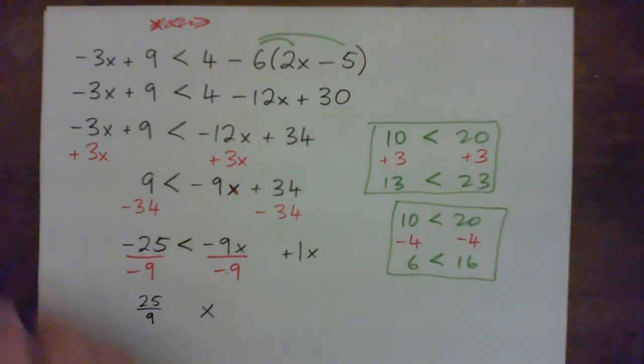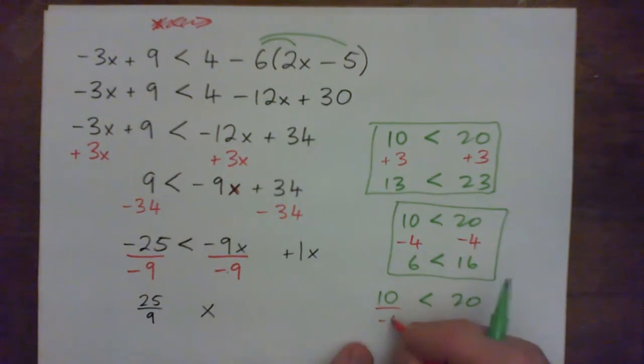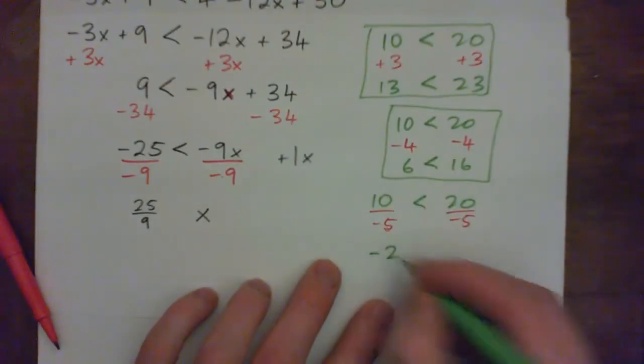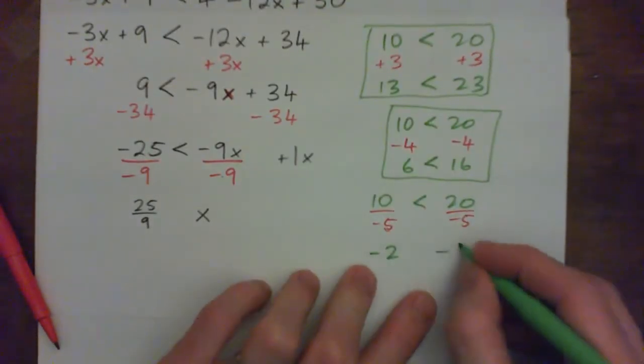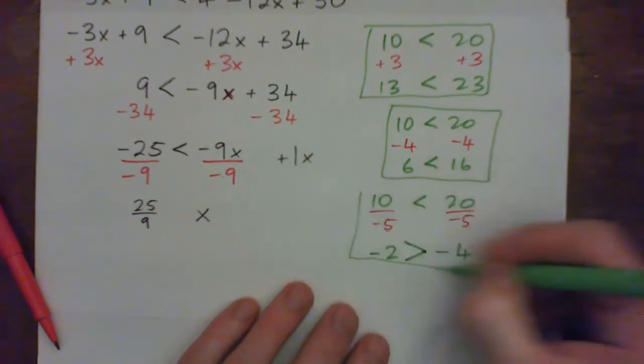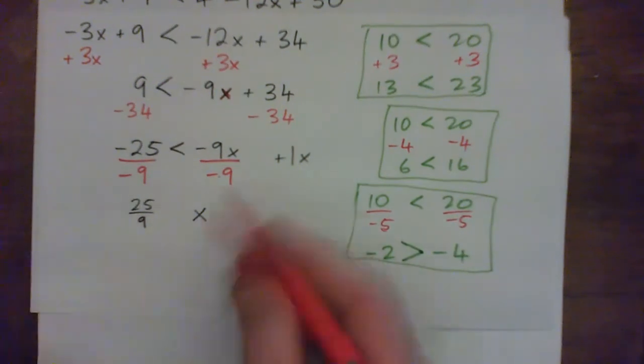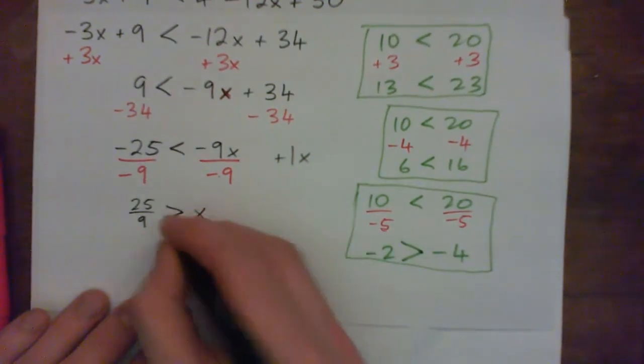But when you divide by a negative things happen. If we had 10 is less than 20, and we divide both sides by negative 5, 10 over negative 5 is negative 2, 20 over negative 5 is negative 4. And negative 4 is actually lesser than negative 2. Negative 2 is greater. So when you divide by a negative, you must change the direction of the inequality. So we divided by a negative. We need to change the direction of the inequality.